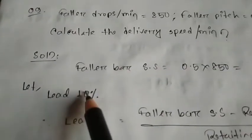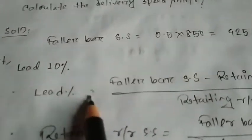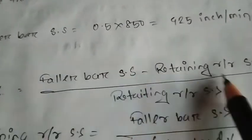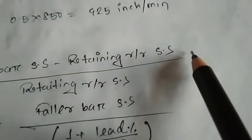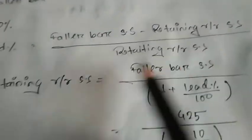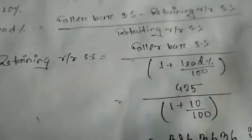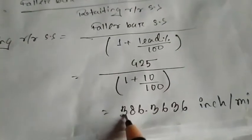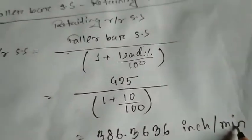Now we are going to save 10% from the lead, for 10% of the lead. So we will get the follower surface speed minus the retaining roller surface speed, and then we will give the lead into 100, so we will get the percentage of the lead to 10%. The actual retaining roller speed is 386.3636 inch per minute.